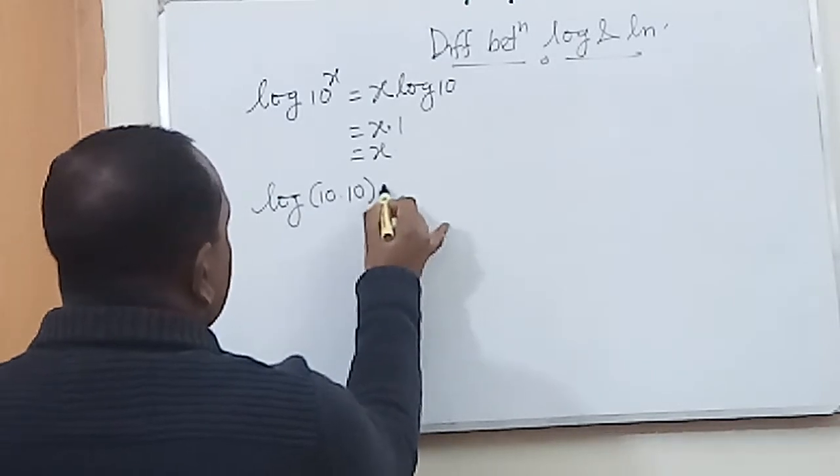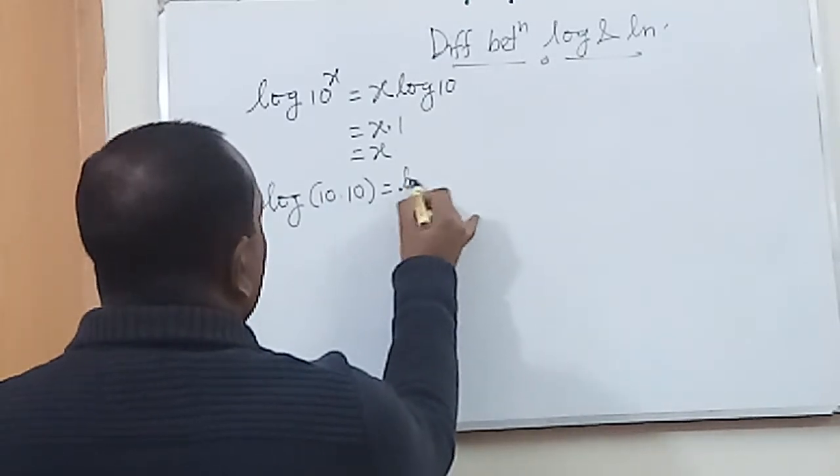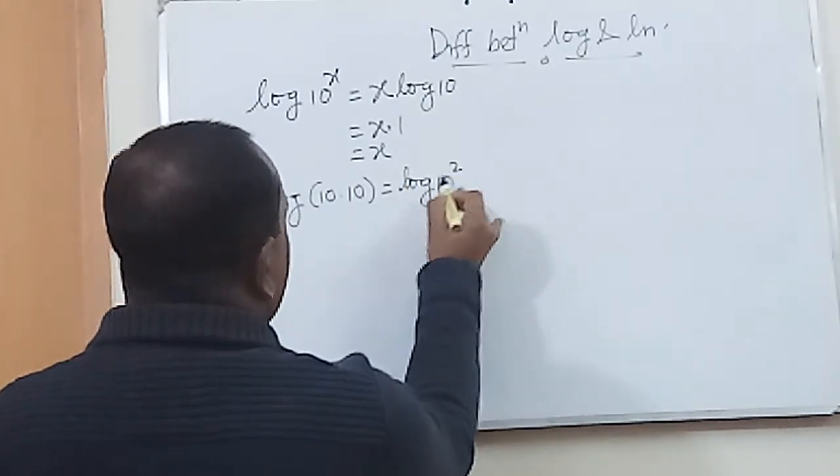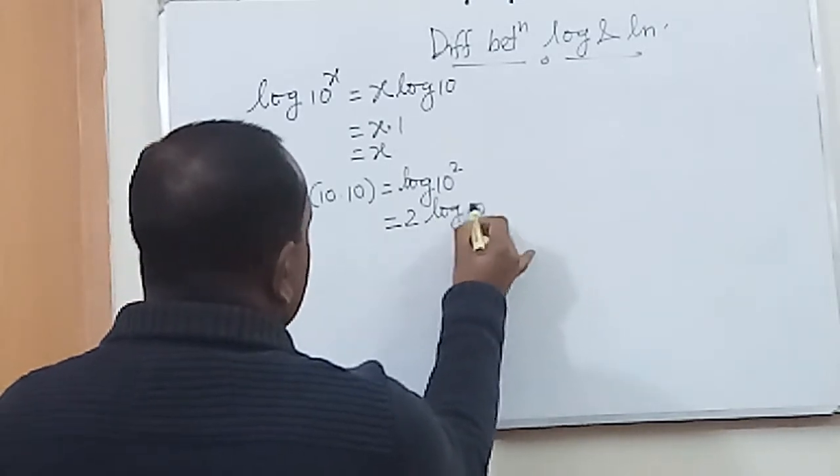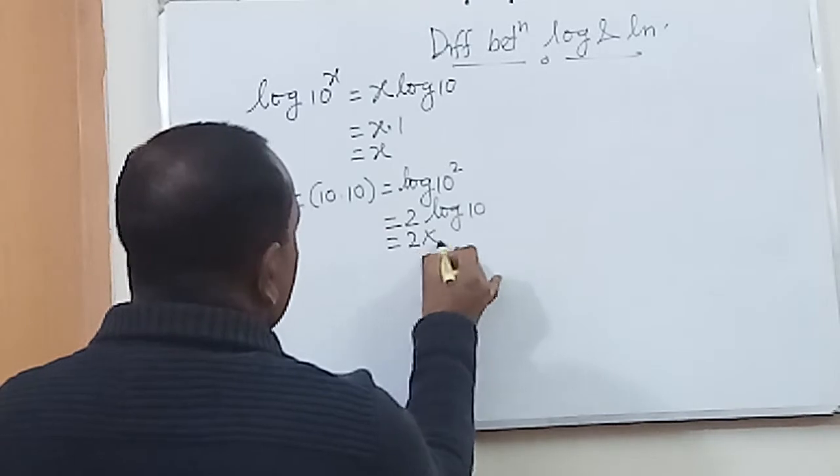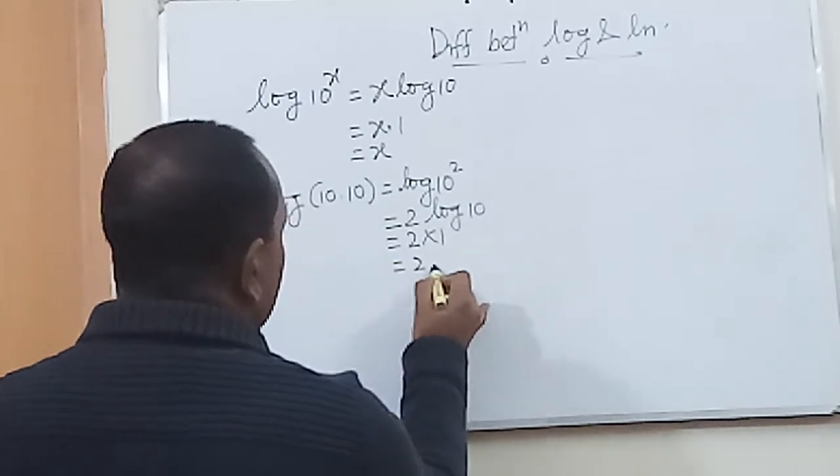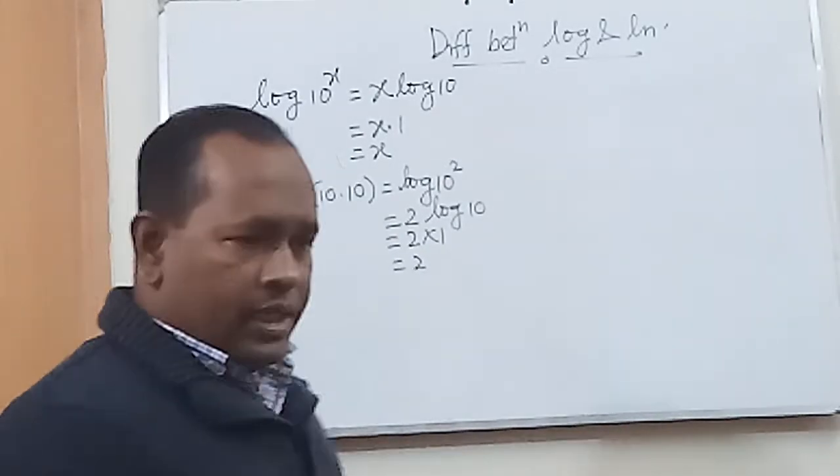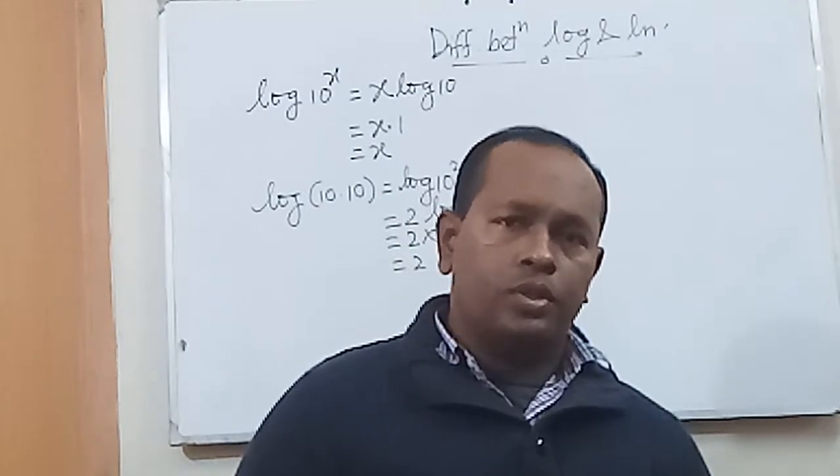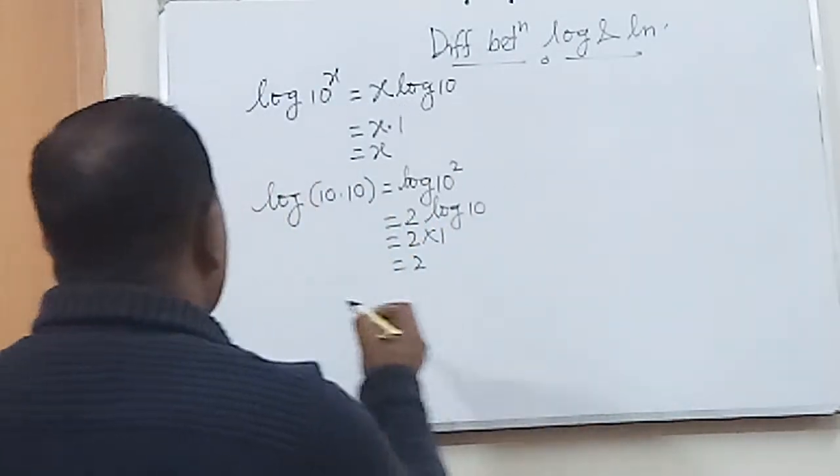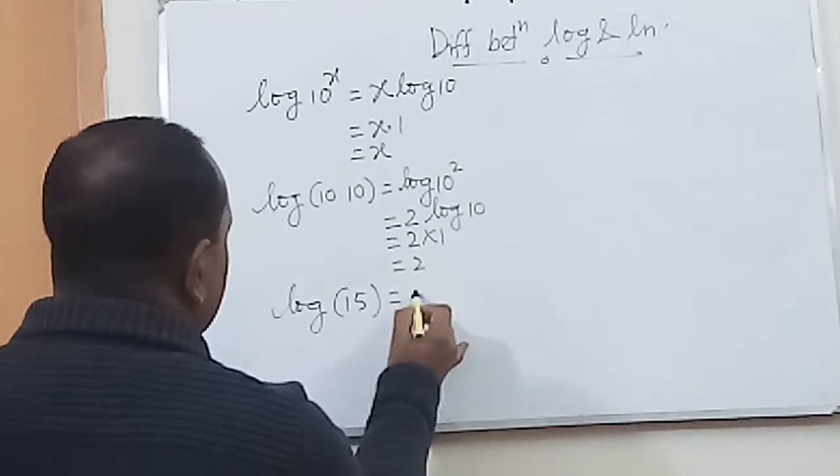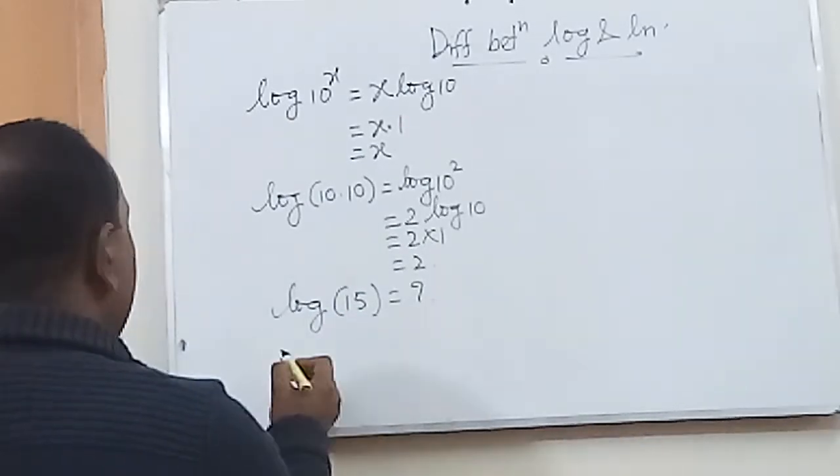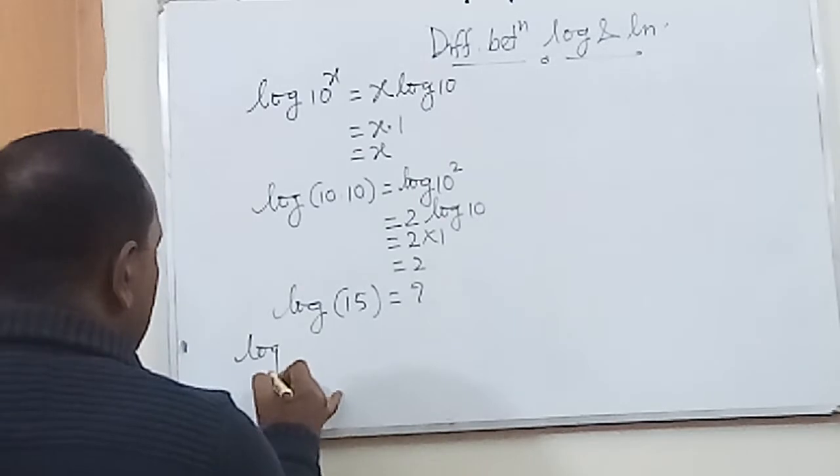That means 2 log 10, so 2 into 1 equals 2. Let's see what is the value of log 15. Log 15 is equals to—we know log 10 is equals to 1.